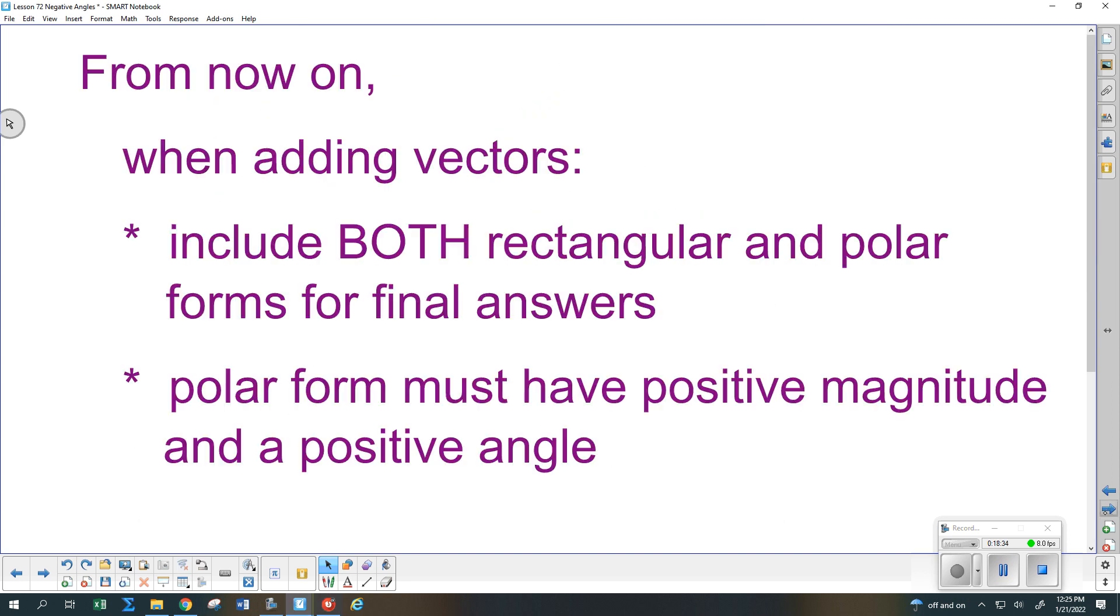From now on, then, when you are adding vectors, I want you to include the rectangular form and the polar form and circle both of those. And when you do the polar form, I need it to be a positive number out here in front and a positive angle in here. We're not ever going to put negative angles in there on our final answers for polar form. So are you guys ready to work on homework?